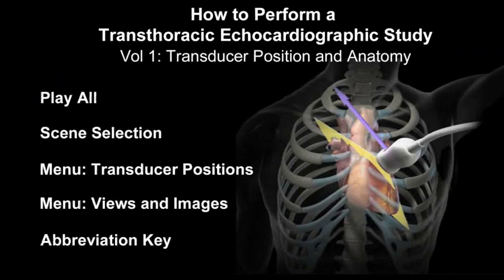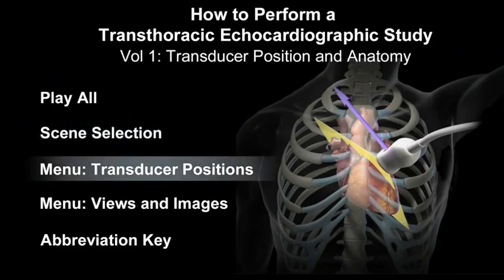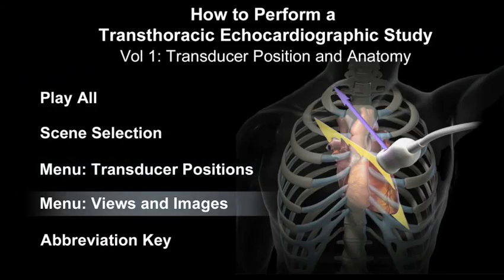This DVD includes a 30-minute instructional video and an interactive section for flexible presentations. The video includes an overview of relevant cardiac anatomy, step-by-step presentation of all transducer positions, and the sequential transducer movements to acquire standard echo images needed to complete a transthoracic echocardiographic study.